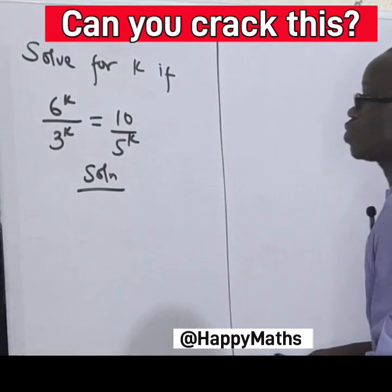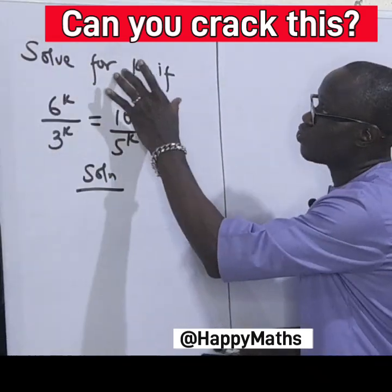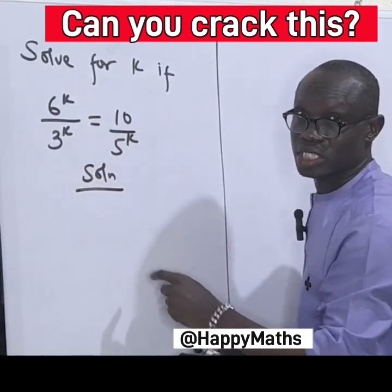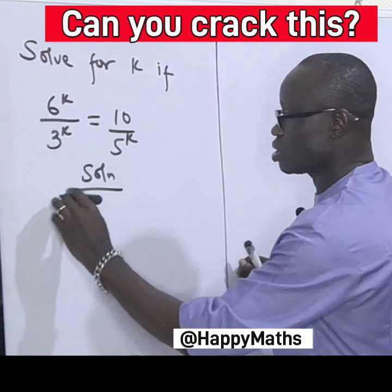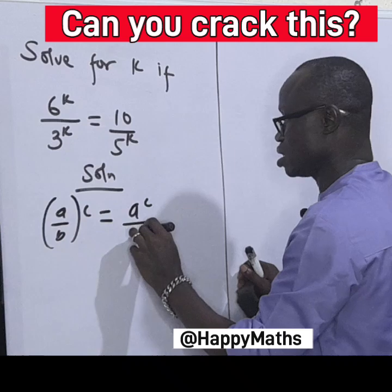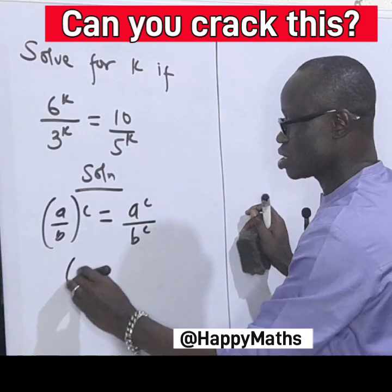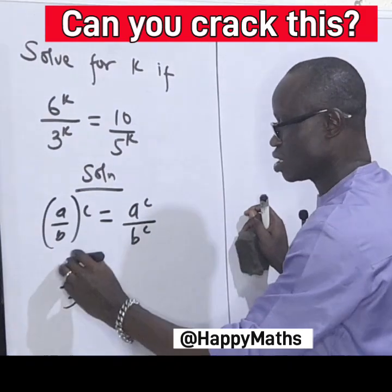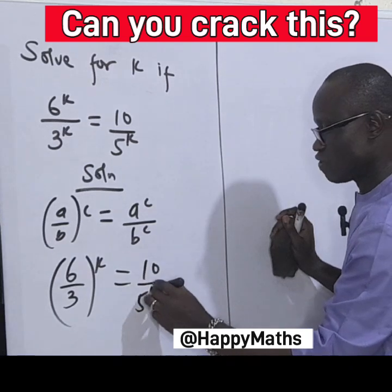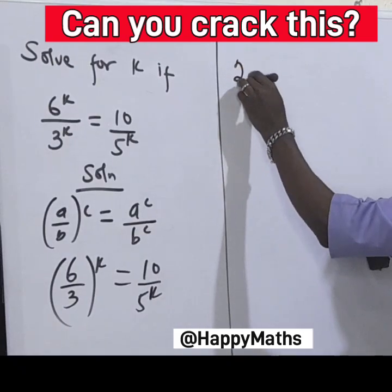Hello. We have an interesting question here. For k, if 6 raised by k divided by 3 raised by k equals 10 divided by 5 raised by k. Now recall that (a/b) raised by c can be distributed — so 6 over 3 raised to the power of k equals 10 over 5 raised by k. Then 6 divided by 3 gives you 2 raised by k.